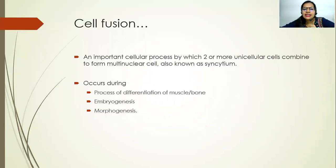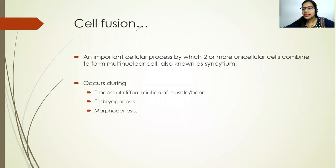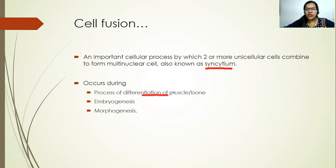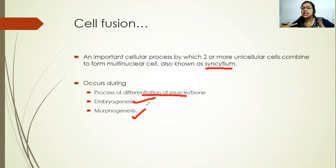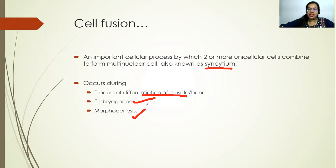Cell fusion is an important cellular process by which two or more cells combine to form a multinucleate cell, which is also called a syncytium. Please remember this word because such questions also come — what is the hybrid called after cells fuse together? It is called the syncytium. This occurs naturally in the body during the process of differentiation of muscle and bone, embryogenesis, and morphogenesis, and also for repair whenever there is an injury or regeneration.